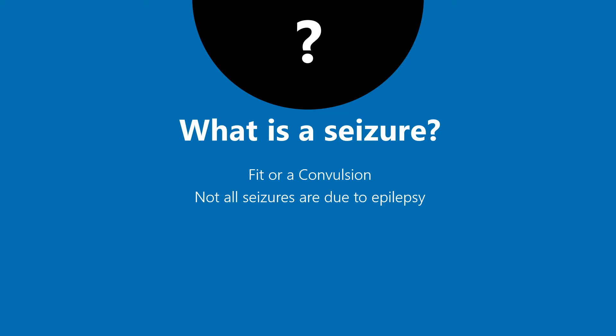Electrical activity happens constantly in our brains and controls movements and bodily functions. If there is a disruption to the blood supply to the brain, it can trigger a seizure, causing uncontrolled movements of the eyes, limbs, and body.